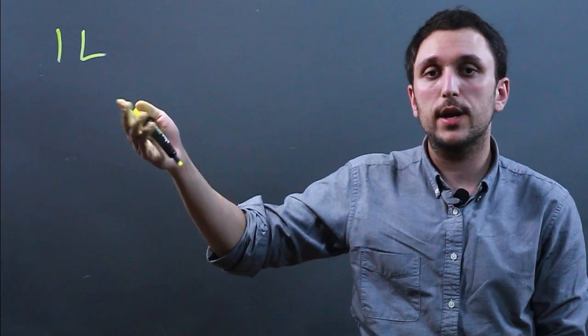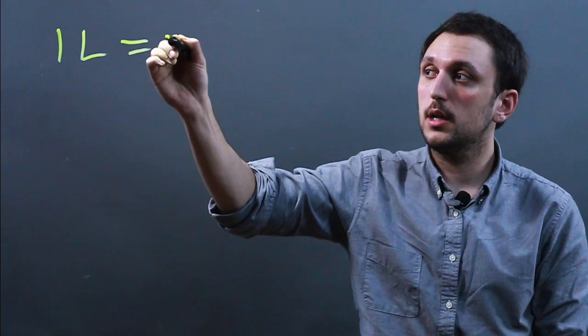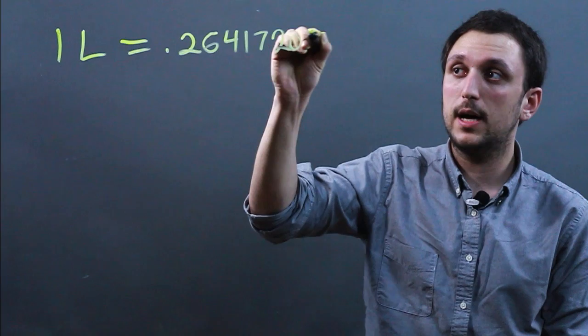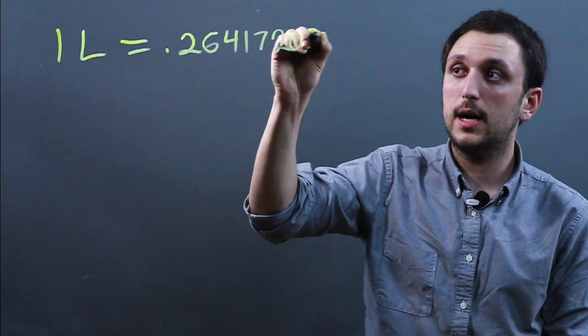So one liter is the basic measurement of volume in the international system of measurement, or the metric system. And a gallon is a basic unit of measurement in the American system, or imperial system, again for volume. So one liter equals 0.264172052 gallons.